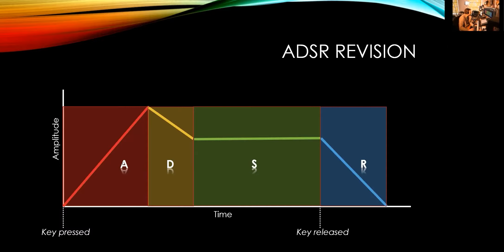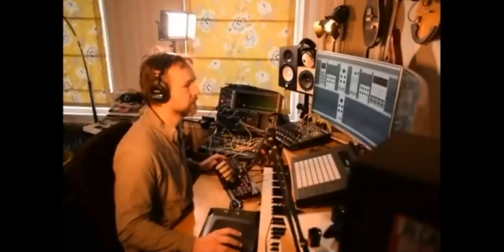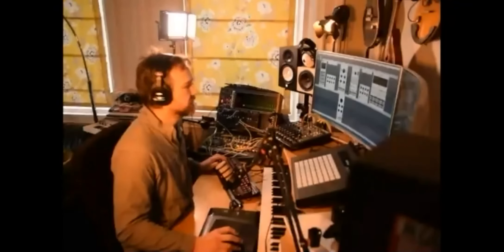The attack is how long it's going to take to go from no sound up to my maximum sound. The decay time is how long it's going to take to go down to the sustain level. Sustain is not time — it's an amount that you sustain while you're holding the button, while the gate is open. Then when I let go of my button, that's the release — the release time is how long before we go from sustain level down to zero volume.